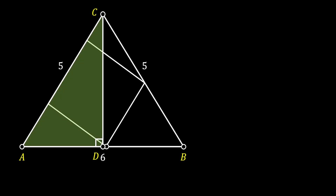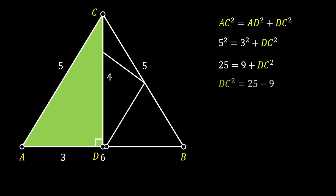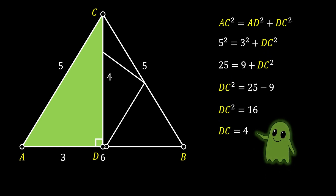We are going to do that by taking a look at triangle ADC. We know that the height of the isosceles triangle divides the base into two identical segments, so since AB equals 6, AD must equal 3. You can notice that this triangle is a 3-4-5 right triangle with hypotenuse 5 and legs 3 and 4. If you are new to mathematics, you can always use the Pythagorean theorem to find this height — I will leave the complete solution on the right if you want to check it out.